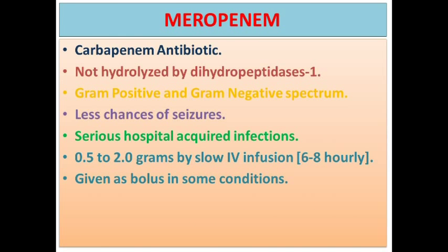The next antibiotic in the class is meropenem. It is in the same class of carbapenems but importantly it is not hydrolyzed by dihydropeptidases, so it can be given as a standalone antibiotic without requiring cilastatin. It has less chance of causing seizures. Used for serious hospital-acquired infections, given as 0.5 to 2 grams by slow IV infusion 6 to 8-hourly.